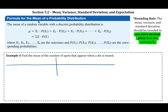The formula for the mean of a probability distribution is similar to weighted averages. You take your variables x₁ through xₙ and their probabilities P(x₁) through P(xₙ), and the mean μ is the weighted average: x₁·P(x₁) + x₂·P(x₂) + … , which we abbreviate as the summation Σ x·P(x).